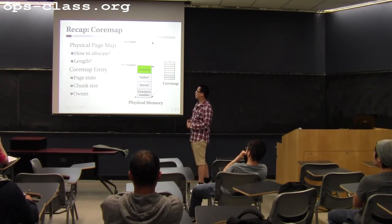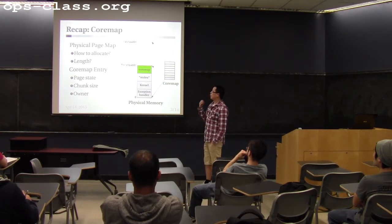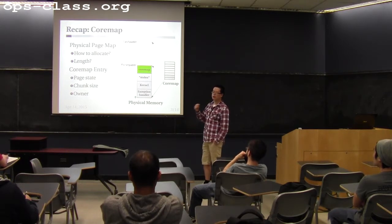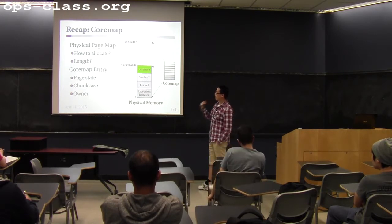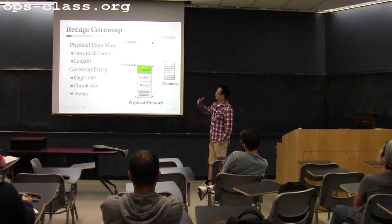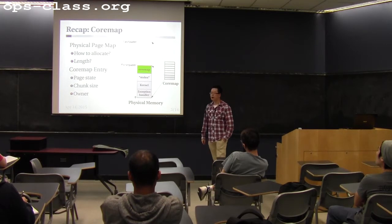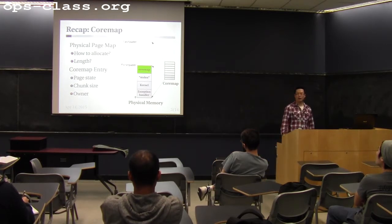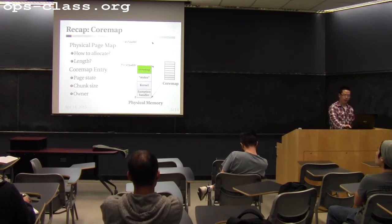Inside each coremap entry you need to decide what information to keep for each page. You want to keep whether the page is available or not, and you also want to know, when you call alloc_kpages, how many pages exactly were allocated, so that later when you call free_kpages you can free exactly that many physical pages. You also need owner information so that later during swapping you can notify the owner. For now you can keep your coremap minimal — just page state and chunk size. You can add more fields to the coremap entry later.